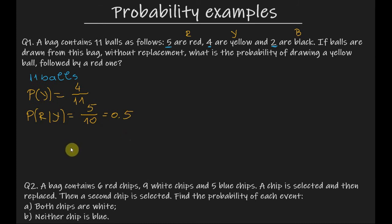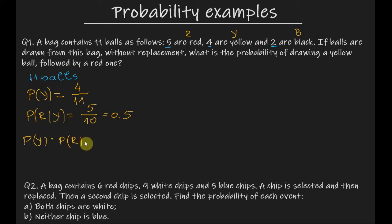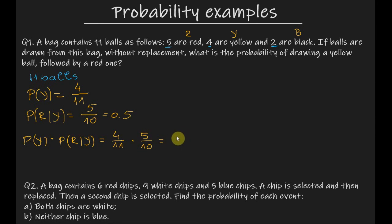Therefore, the probability of drawing a yellow ball followed by a red one is P of Y times P of R given that Y has occurred, which equals 4 over 11 times 5 over 10. This equals 2 over 11.